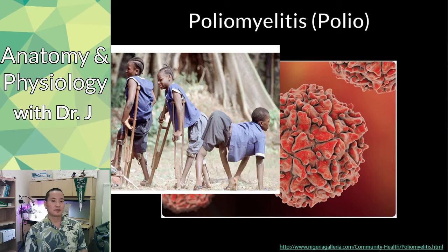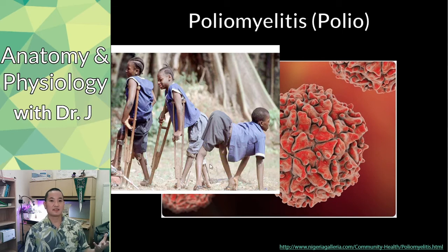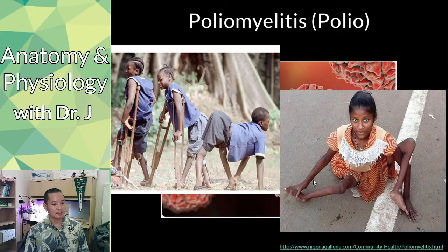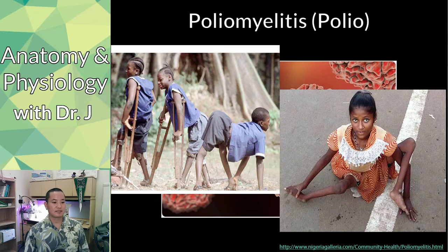Whenever you have damage to motor neurons that control a muscle, what happens to that muscle? It atrophies. These children have very skinny limbs because they've lost their motor nerves in the muscles of their legs. This is why people who survived polio and experienced poliomyelitis have deformations and difficulty getting around — they lost control of muscle tone due to denervation.